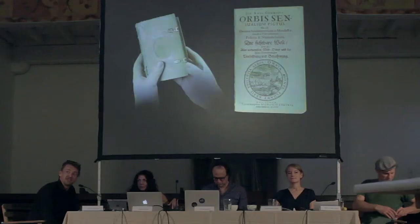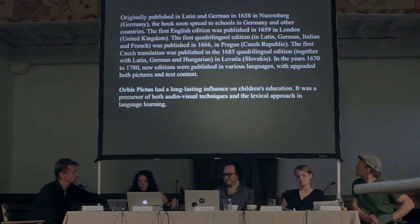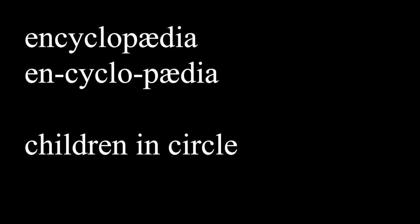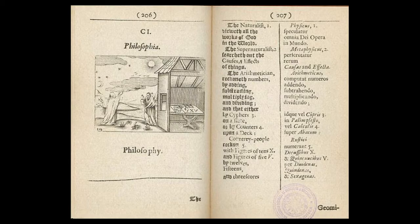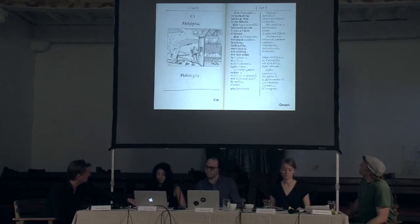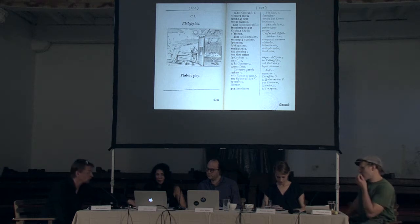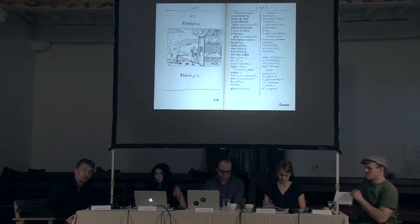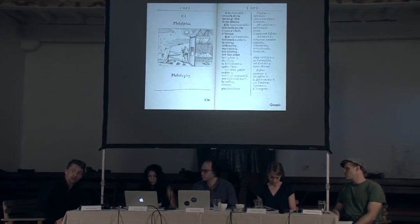Orbis Sensualum Pictus means Visible World in Pictures. It's about translation, education, and it's an encyclopedia — encyclopedia meaning 'children in circle.' These are a few pictures from the first English issue. You can see it's a picture paired with a word; Latin is the base and always translated. Over the next two centuries, this publication was translated into 14 languages and distributed widely around the world. Komenius belongs among the strong cosmologists of his era, alongside Francis Bacon and others, but he had a very specific approach — not esoteric, but exoteric.